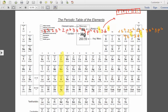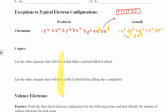So this exception occurs when you have a half-filled s and a half-filled d orbital. It applies to all the elements in that group: chromium, molybdenum, tungsten, and seaborgium.